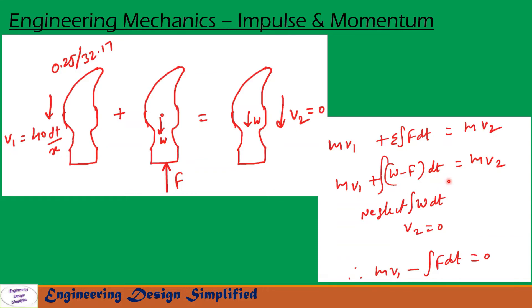So after hitting the nail, the hammer will come to rest, then the velocity of the hammer and the nail together, that is v2, will become zero and its weight is acting downwards. In this problem, weight of the nail is negligible, so we are taking only weight of the hammer here.